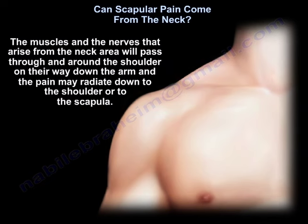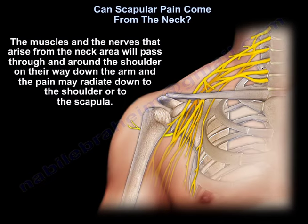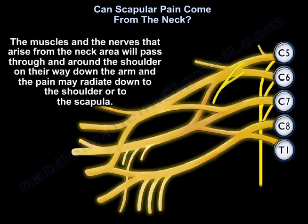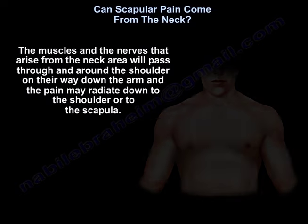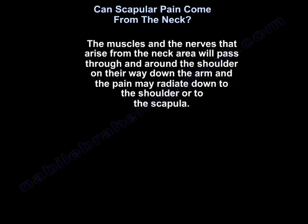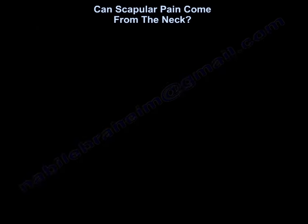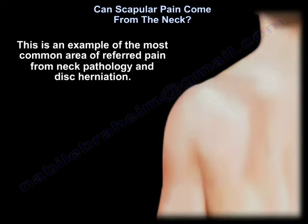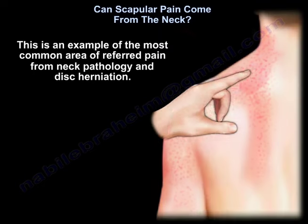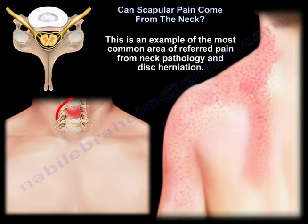The muscles and nerves that arise from the neck area will pass through and around the shoulder on their way down the arm, and the pain may radiate down to the shoulder or to the scapula. The pain is usually at the superior medial aspect of the scapula. This is an example of the most common area of referred pain from neck pathology and disc herniation.